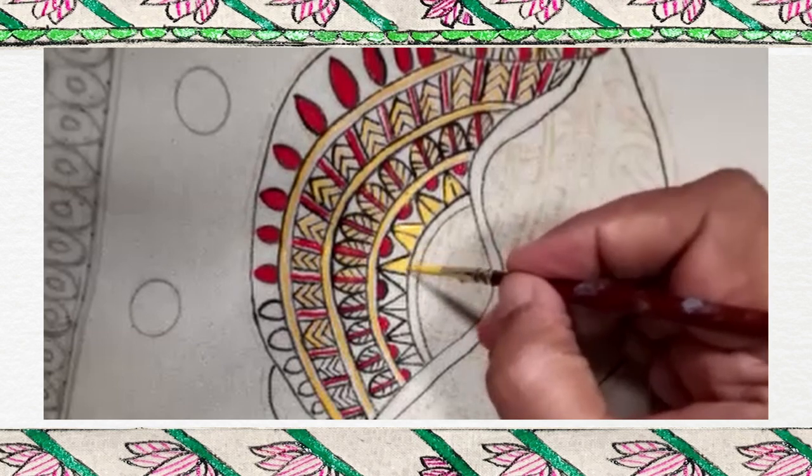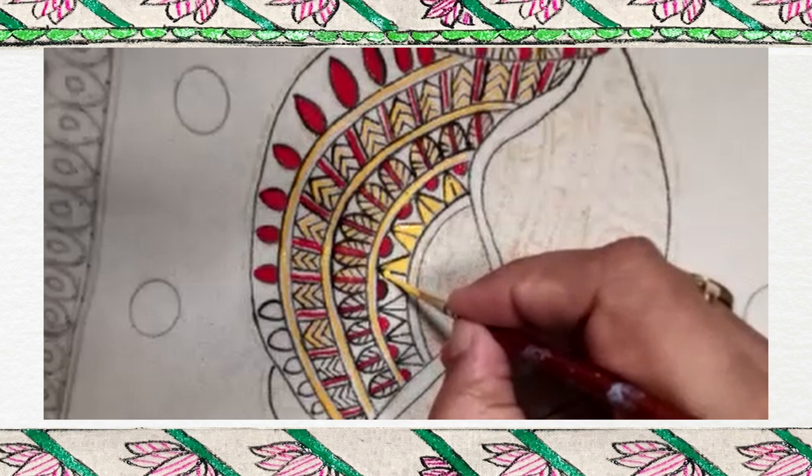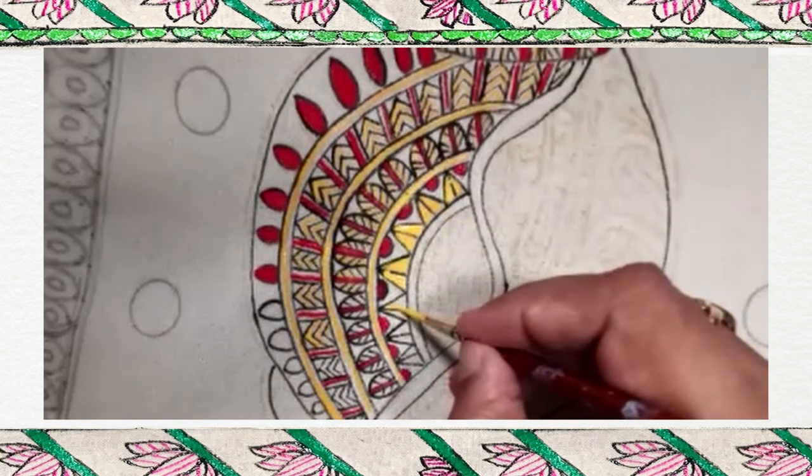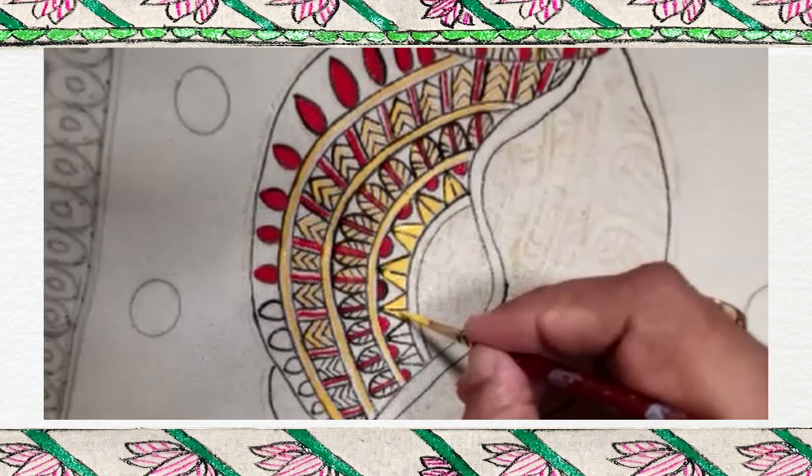Just to summarize, line work is called the kachni and filling of colors is called the bharani. And everywhere black outline has to be there.